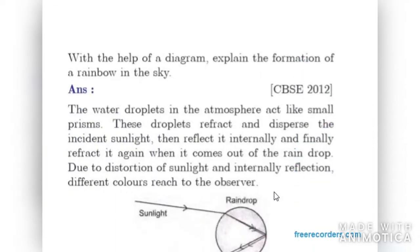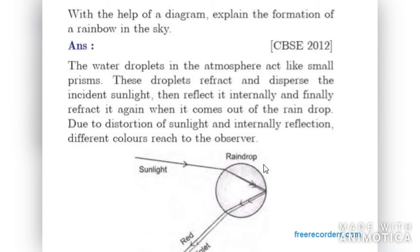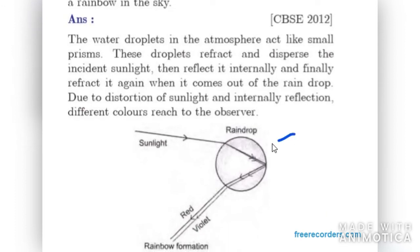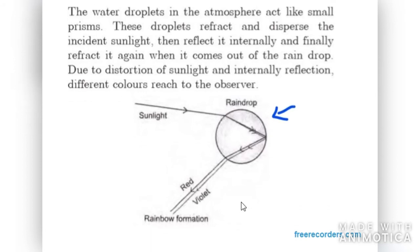Moving on to next. With the help of a diagram explain the formation of a rainbow in the sky. As you can see, this shows the water droplet. The circular one is the water droplet and it acts as a small prism. When sunlight is incident on the raindrop, it gets refracted or dispersed. Now when it comes out, it shows distortion. The sunlight is now distorted and due to internal reflection within the raindrop, different colors reach the observer's eye. That's how the rainbow is seen in nature.